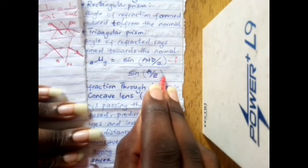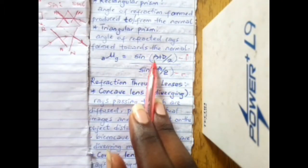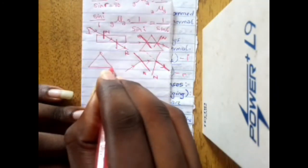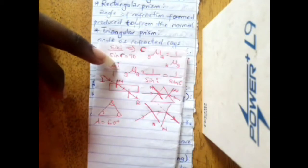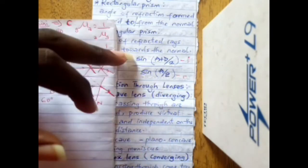For triangular prisms, the refractive index formula is: n = sin((A + D)/2) / sin(A/2), where A is the angle of the triangle (60 degrees for an equilateral triangle) and D is the angle of minimum deviation. For rectangular prisms, the formula is similar to the basic Snell's Law formula: n = sin i / sin r, since the angle of incidence and angle of refraction are defined differently.